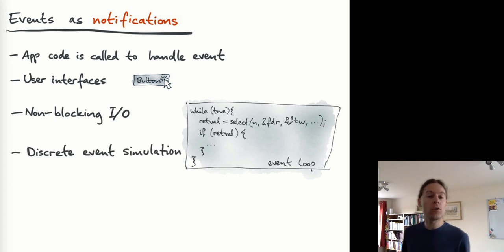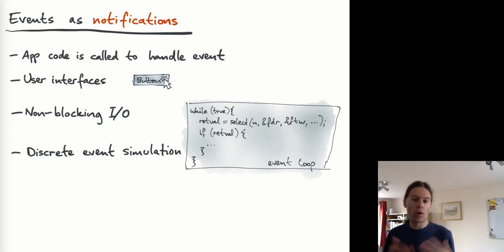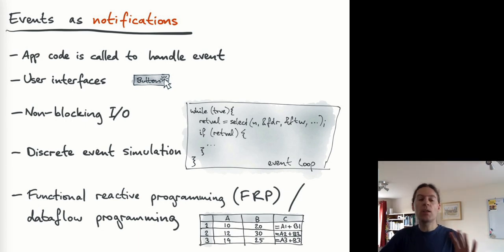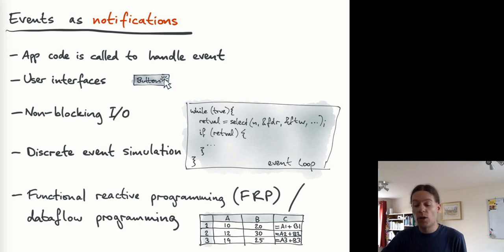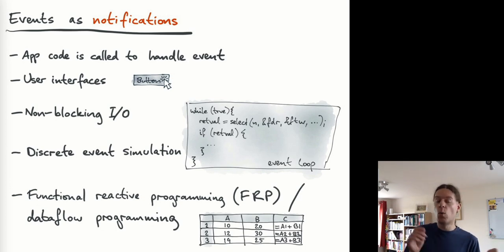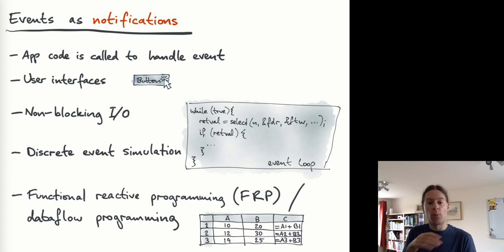Event loops also occur in simulation software, where events would be simulated rather than real-life occurrences. This generalizes to reactive programming, functional reactive programming, and dataflow programming — all ways of writing code that handles changing data. One example is a spreadsheet: a formula in one cell references the value in another cell, and if that input cell changes, the formula result automatically gets recalculated. The change of data in one cell is an event which gets propagated through potentially multiple formulas to update all dependent data.